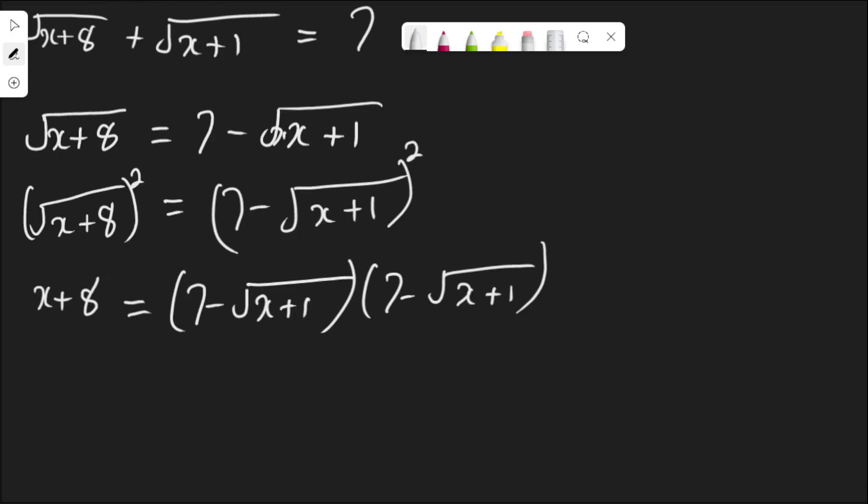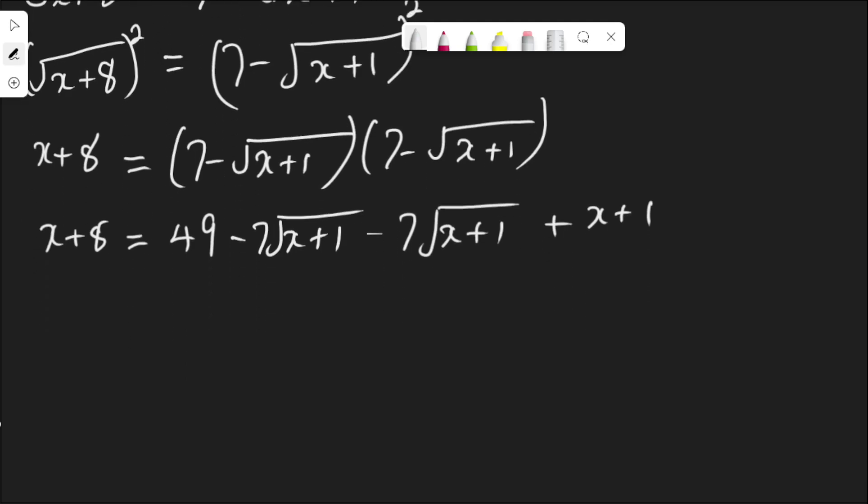I have negative root x plus 1 minus root x plus 1. Root x plus 1 times root x plus 1 is x plus 1. This 7 root x plus 1 and this can be added together, negative 7, negative 7, that is negative 14.